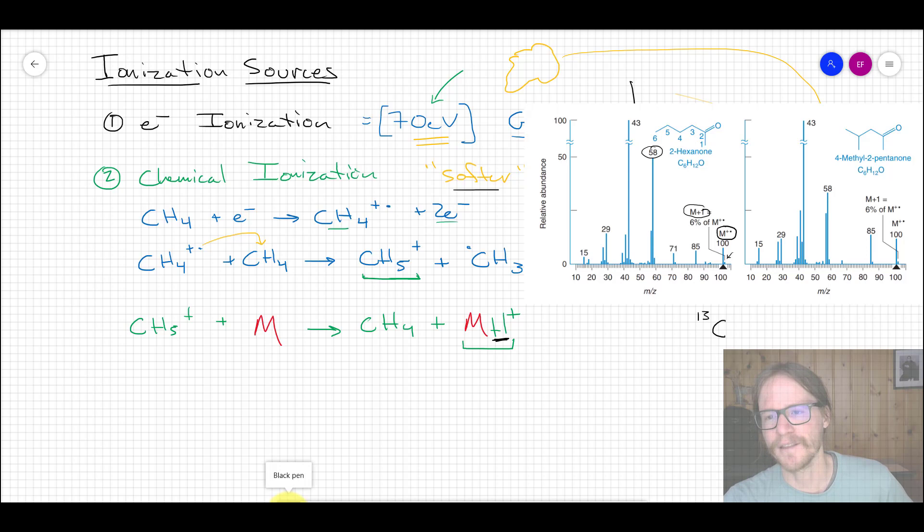Even in this case, you can see in both of these there's very little of the original molecule left. Instead, we have dominant these fragments that weigh 43 and 58. So that's the general gist in terms of these two big ionization sources.